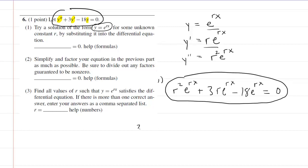Now, for part two, we have to simplify and factor this equation. They give us a little bit of a hint here. They say be sure to divide out any factors that are guaranteed to be nonzero. So if we look carefully, we have a common factor of e to the rx. And we know that e to the rx can never equal zero. It's an exponential function that looks something like this, and it approaches a value of zero over here, but it never will actually equal zero. So we can take them up on their clue. We can divide out that common factor.